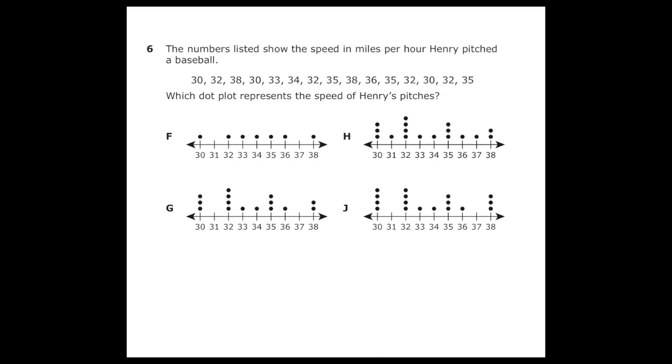So starting with 30, we're going to see 30 listed once, twice, and three times, so our first number should have three dots. So we can mark out letter F because 30 only has one dot. We can also mark out letter J because 30 has four dots.